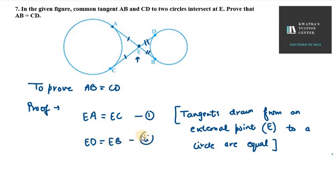This is equation number two. Now if you add them, then what will happen? Adding equation one and two, it will be EA plus EB is equal to EC plus ED.